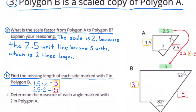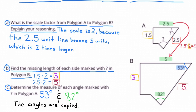Part C: Determine the measure of each angle marked with a question mark in polygon A. A scaled copy is a copy, so the angles are copied. The angles will still be 53 degrees and 82 degrees.